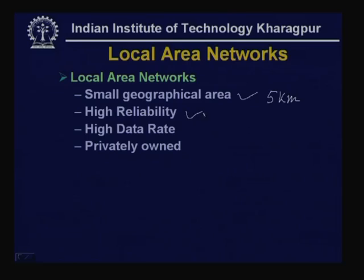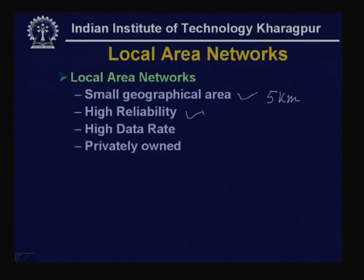The second important feature is high reliability. In wide area networks, because the medium used is not very reliable — the standard telephone network using twisted pair has very poor reliability — local area networks use very reliable media like optical fiber and coaxial cable, and even twisted pair over very small segment lengths. As a result, it is very reliable, so the need for error detection and correction is minimal; particularly error correction is not used, though error detection is provided.